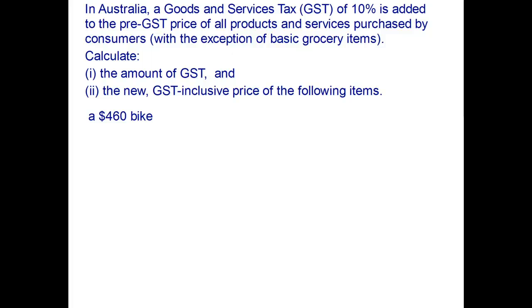For example, we've got a $460 bike. That's how much the retailer wants to get for the sale of the bike. What we have to do is add on 10% onto that, which is the amount of the GST, and then work out what the actual price tag is going to be to the customer.